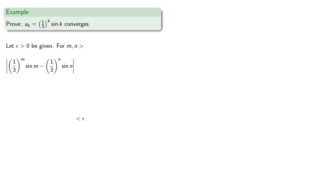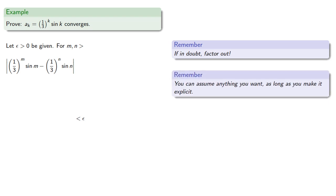And as much as I despise bumper sticker mathematics, here's a useful one. If in doubt, factor out. Here we see both terms are multiplied by a power of one-third, and we can factor out a power. Although we'd rather not have to deal with negative exponents. So remember, you can assume anything you want, as long as you make it explicit. We'll assume that m is the larger of the two numbers.